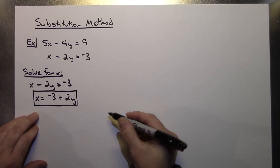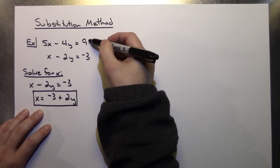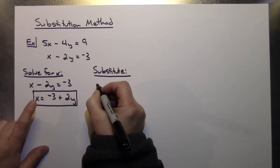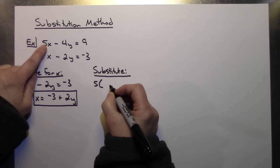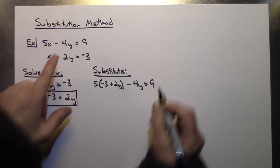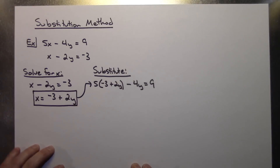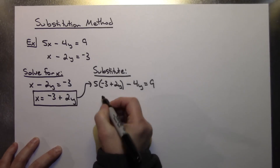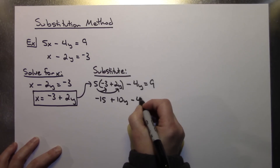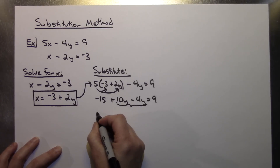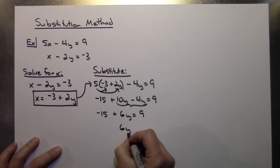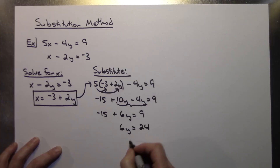It's called substitution because now I take that expression and substitute it back into the top equation in place of x. So I'd have 5 times (negative 3 plus 2y) minus 4y equals 9. Applying the distributive property: negative 15 plus 10y minus 4y equals 9. Combining like terms: negative 15 plus 6y equals 9. Adding 15 to both sides: 6y equals 24. Dividing both sides by 6: y equals 4.